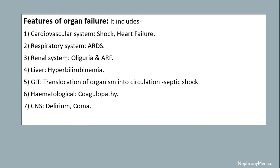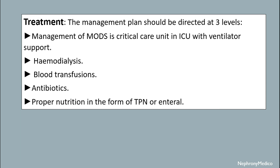Features of organ failure include: cardiovascular system — shock and heart failure; respiratory system — ARDS; renal system — oliguria and ARF; liver — hyperbilirubinemia; GIT — translocation of organisms into circulation leading to septic shock; hematological — coagulopathy; and CNS — delirium and coma.